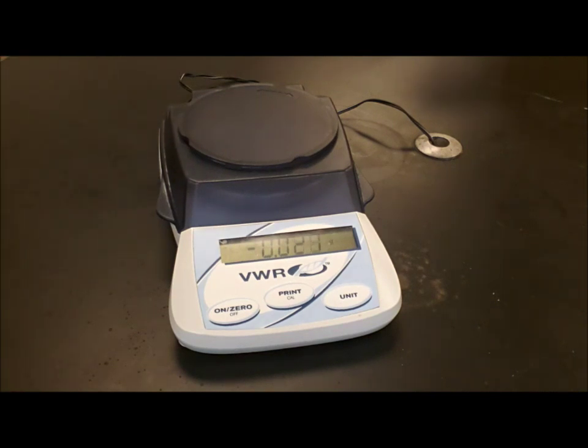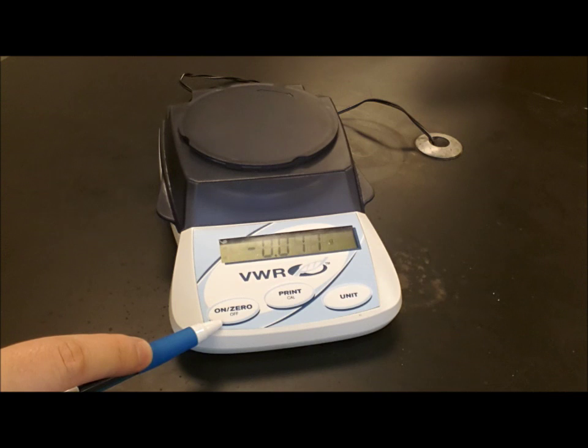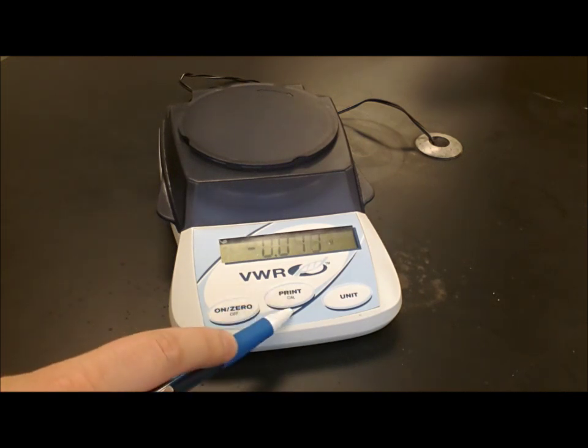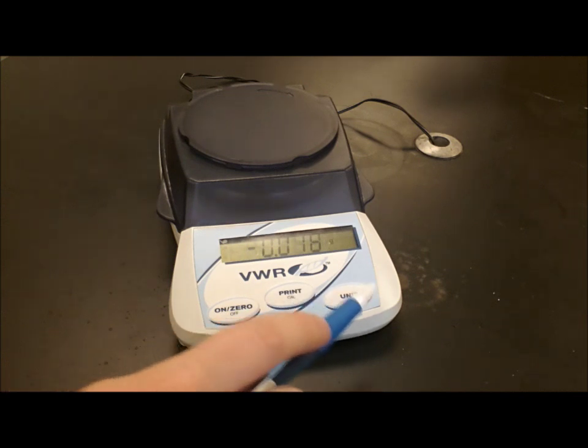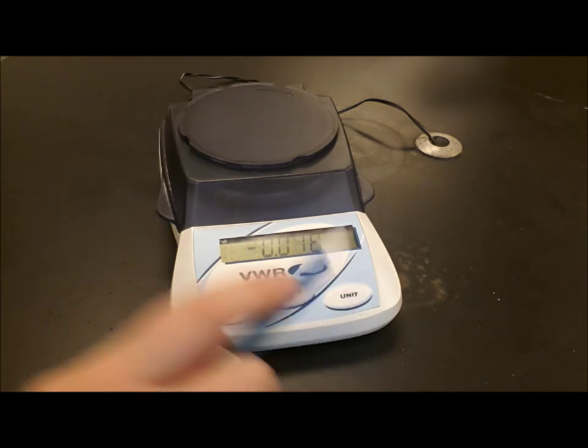There are several buttons on the front of it. The on-off zero button, which turns it on or turns it off. You won't really need to worry about that. The print-slash-calibration button, neither of which is going to apply because we don't have it hooked up to a printer and I don't want you calibrating it. And the unit button, which you will also not worry about.